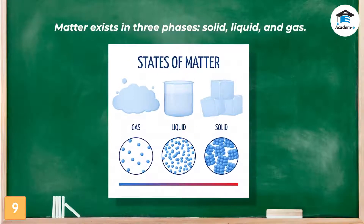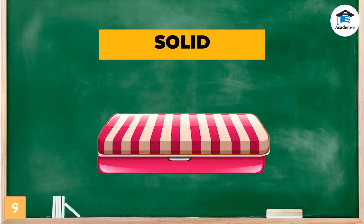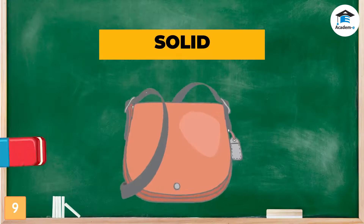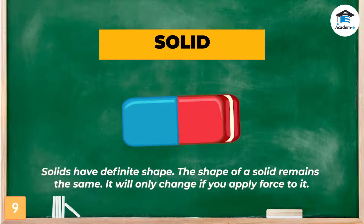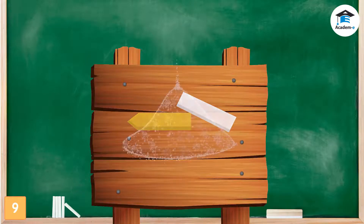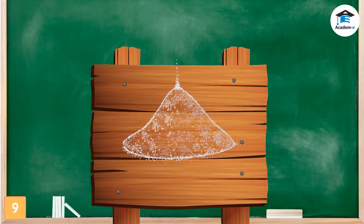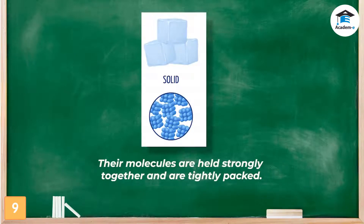Matter exists in three phases: solid, liquid, and gas. Place your eraser inside your pencil case — does its shape change? Place it inside your bag — does the shape of your eraser change? Solids have definite shape; the shape of a solid remains the same and will only change if you apply force to it. The shape of chalk, for example, will remain the same unless you pound it. Solids have definite shapes because their molecules are arranged in a fixed pattern, and their molecules are held strongly together and are tightly packed.